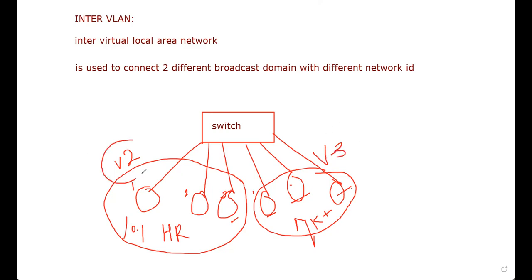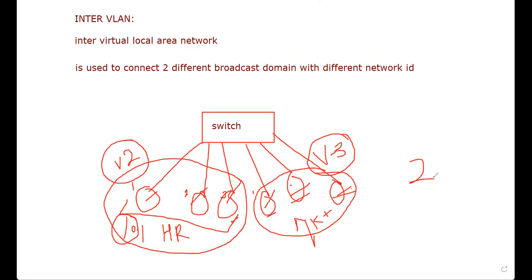In today's topic, HR PCs have addresses like 10.0.0.1, 10.0.0.2, 10.0.0.3 and Marketing PCs have addresses like 20.0.0.1, 20.0.0.2. Now on the same switch we have two different network IDs. The goal in today's inter-VLAN topic is to connect these different broadcast domains with different network IDs to each other.